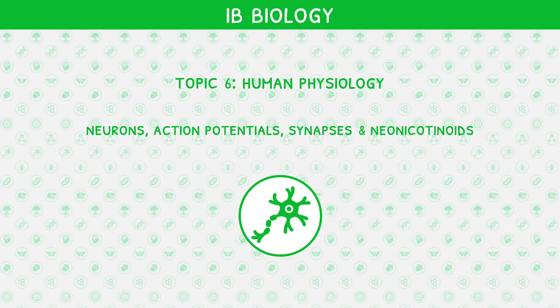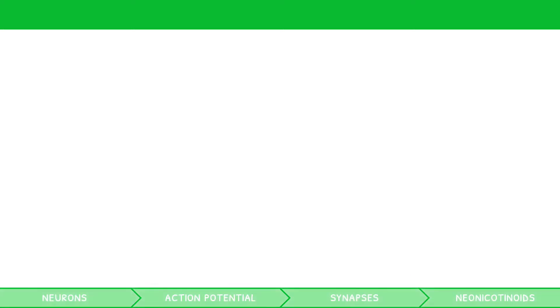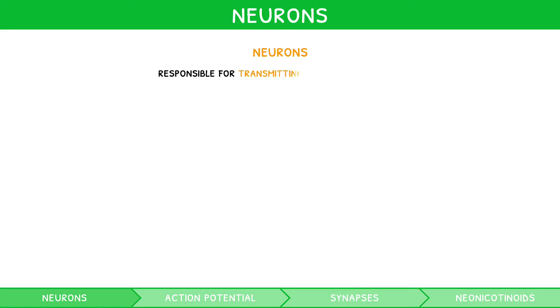The human body is a complex arrangement of cells. Among the most important are neurons, the cells that make up our nervous system. They are responsible for transmitting electrical impulses.